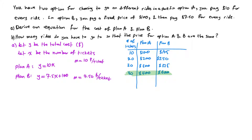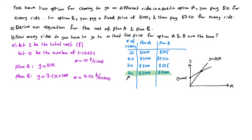Another method is to actually graph the two plans. We know y equals 10x has a steep slope, and the other plan is y equals 7.5x plus 100, so the y-intercept starts at 100 and the slope is not as steep. They will meet at some point. We now know the point is 40 tickets and $400 cost, so on the graph that intersection point is at (40, 400).